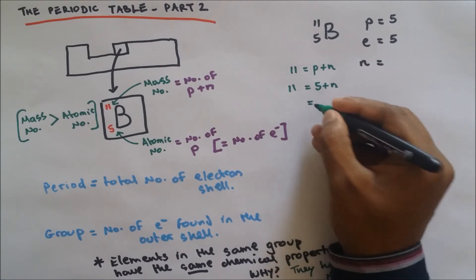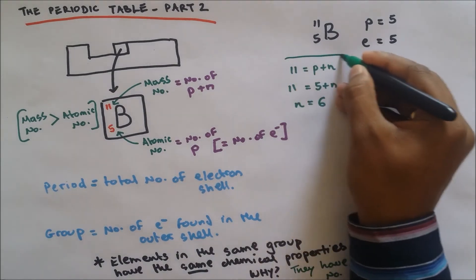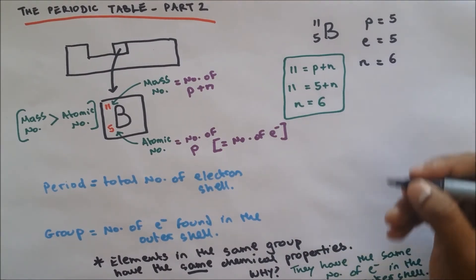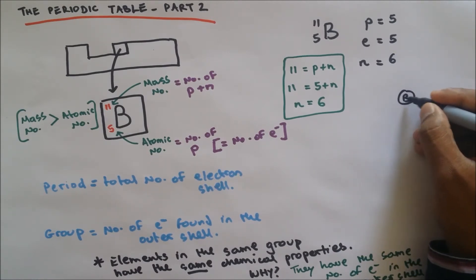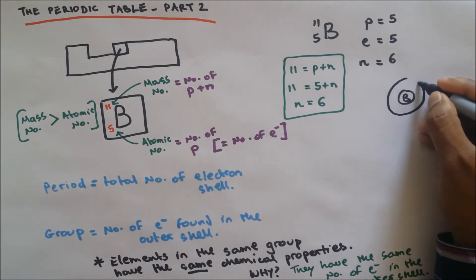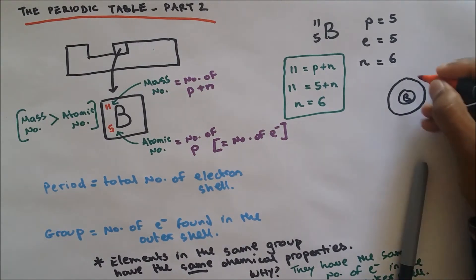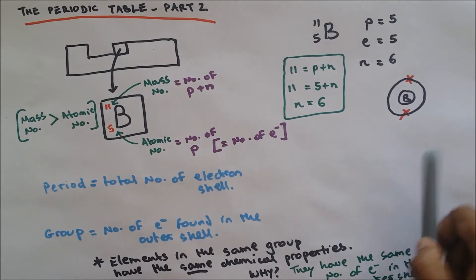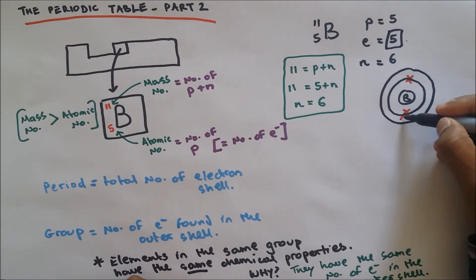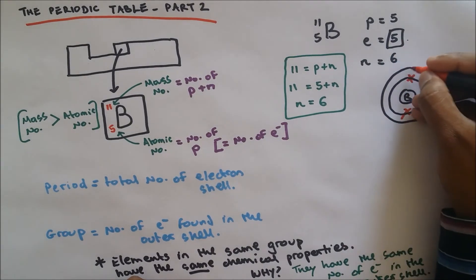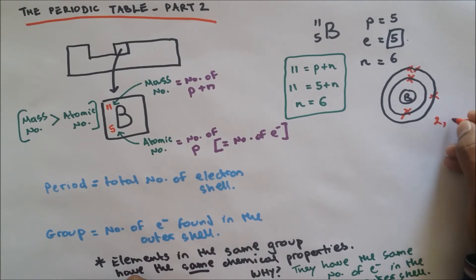So neutron number plus 5 equals 11, therefore neutrons equal 6. That's the simple method to find it. To draw the atom, you write the nucleus with boron inside. The maximum number of electrons in the first shell is 2, so we can't put more than 2. We need to go up to 5 total, so we open up the second shell and put 3 there.